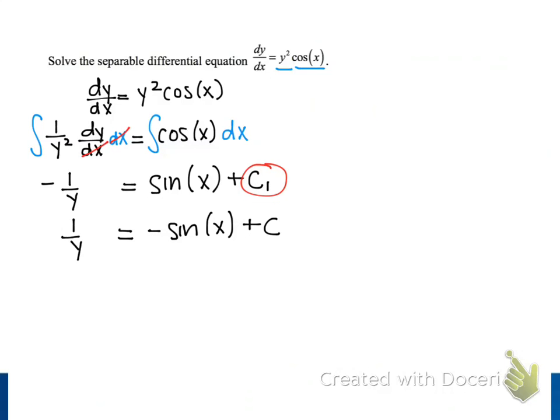Our last step for solving for y is taking the reciprocal of both sides. On the left side, this just means we'll have y. On the right side, we get 1 over negative sine of x plus c. Notice that that plus c is also in the denominator, because we want the reciprocal of the entire expression, negative sine of x plus c.